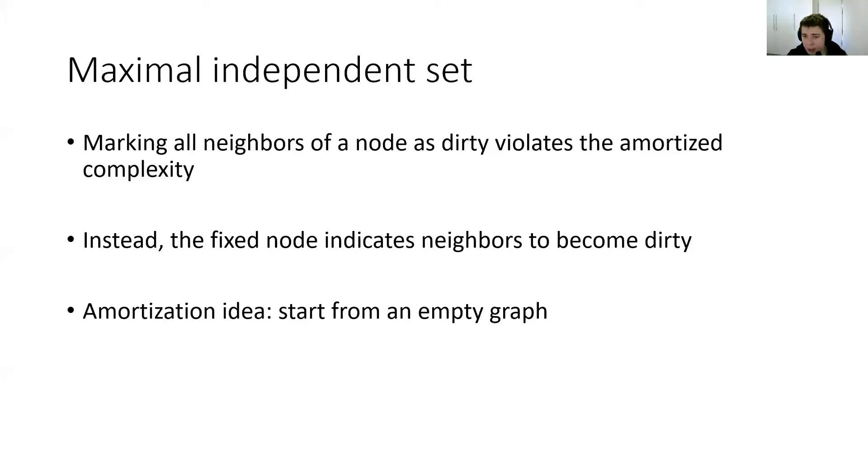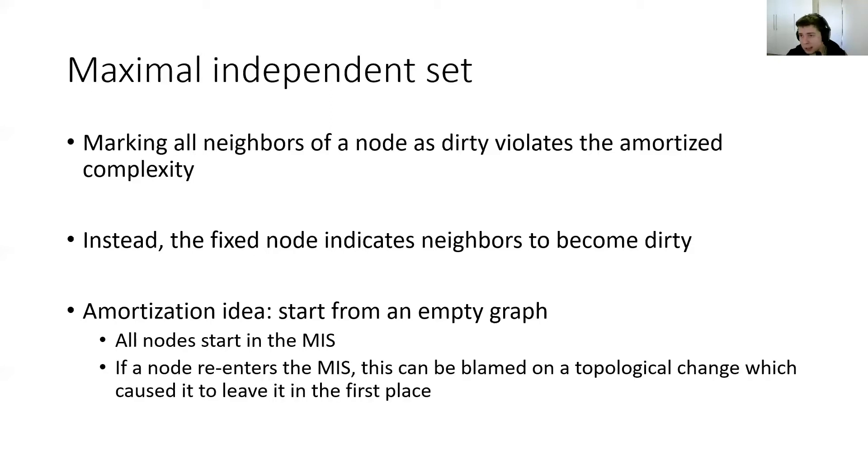The amortization idea here comes into play from the fact that we start from an empty graph. If we start from an empty graph, then all nodes start in the MIS. Now observe that if a node re-enters the MIS—that means sometimes it left the MIS and then it entered it again—then this can be blamed on a topology change which caused it to leave the MIS in the first place. This ties to the complexity of the naive, greedy, distributed MIS algorithm in the static setting, where you just add at least one node to the MIS every round. The running time of this greedy algorithm is just linear in the size of the MIS, so it may be much smaller than n, where n is the number of nodes.